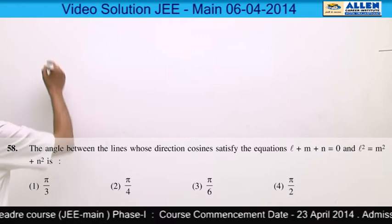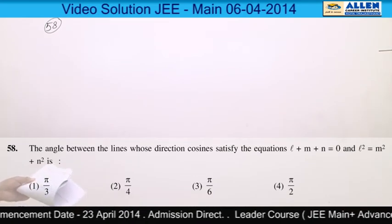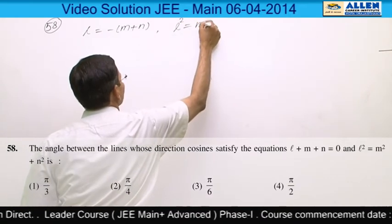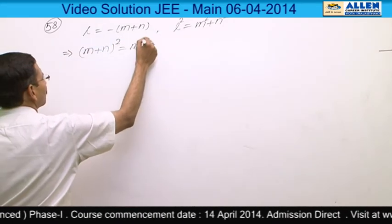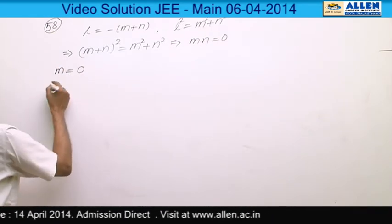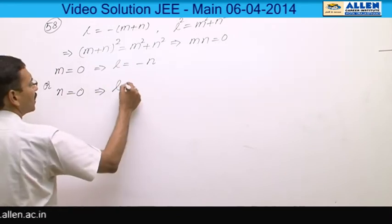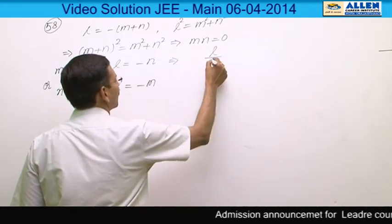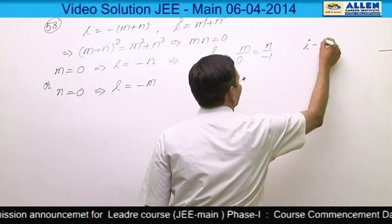Question number 58. We have two relations: l = −m + n and l² = m² + n². Eliminating l gives (m + n)² = m² + n², which implies mn = 0. So either m = 0 or n = 0. If m = 0, then l = n, so the direction ratios give l/1 = m/0 = n/−1, meaning this line is parallel to the vector î − k̂.